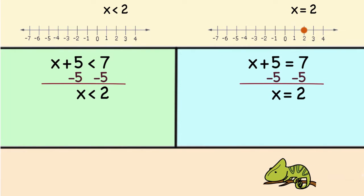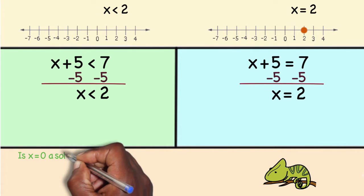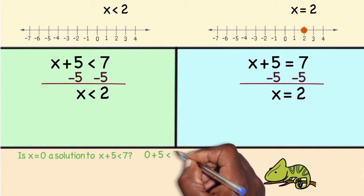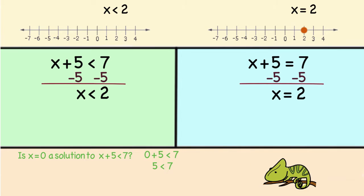When I see x is less than 2 that tells me there isn't just one answer. I'm allowed to pick any number that's less than 2 to check my original problem. So I'm going to choose 0 because I know 0 is less than 2 and see if I get a number that's less than 7. 0 plus 5 is 5. 5 is less than 7 which is true.